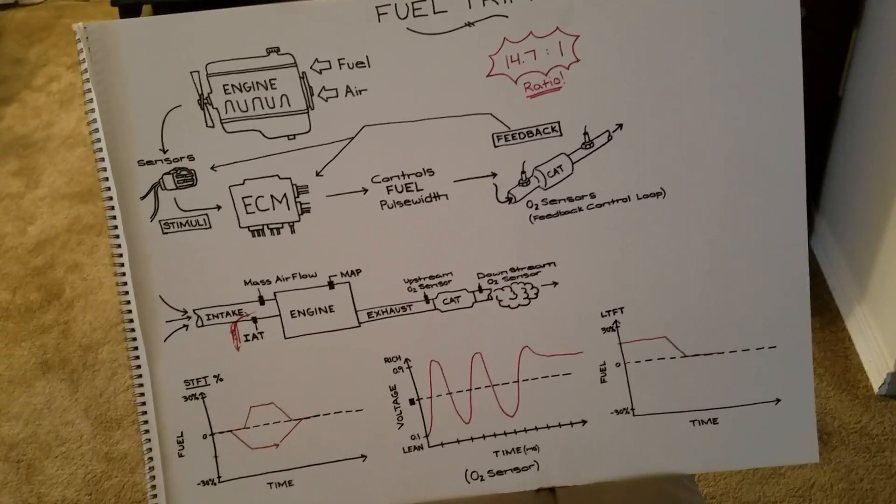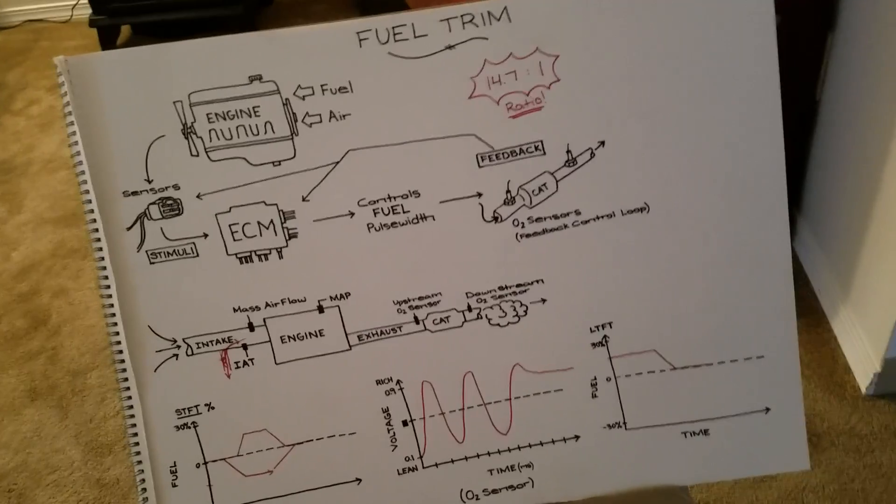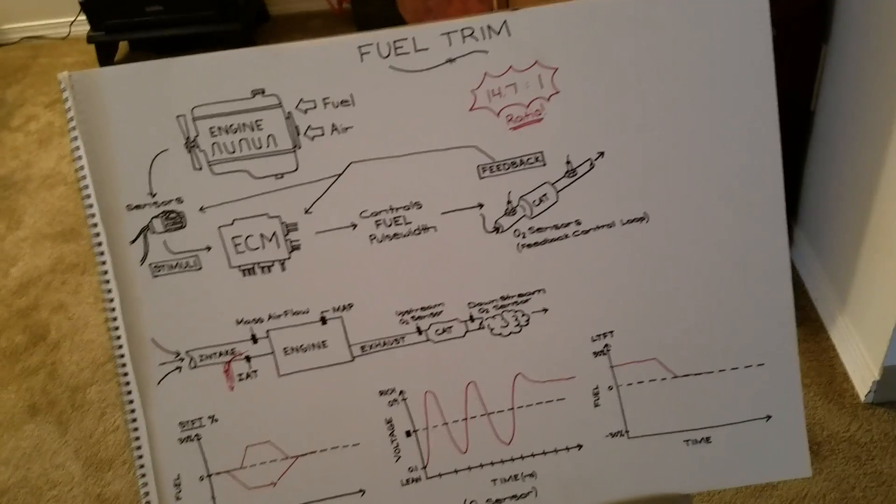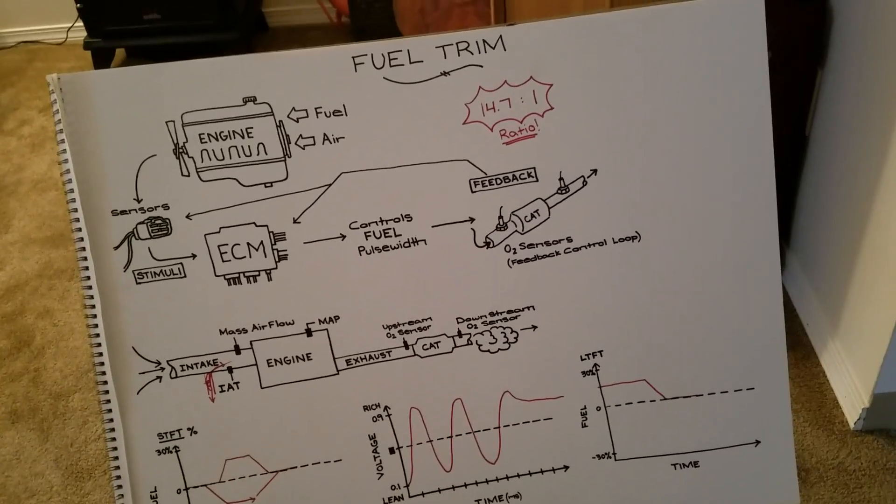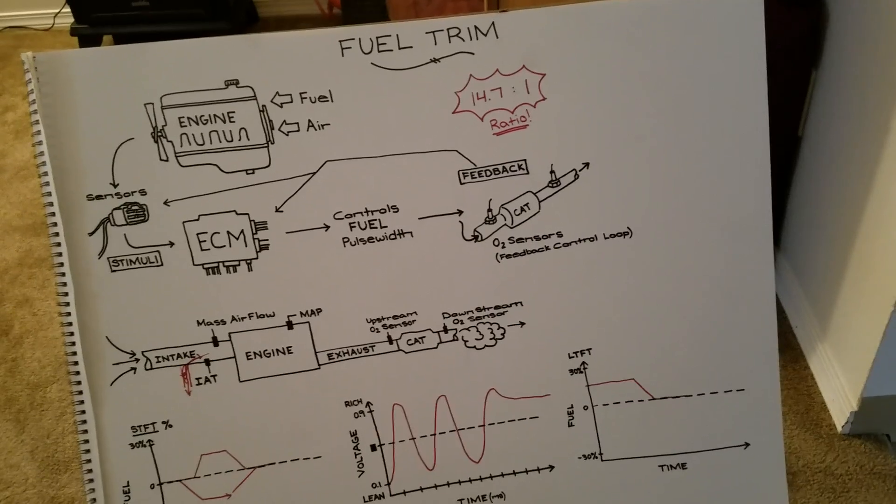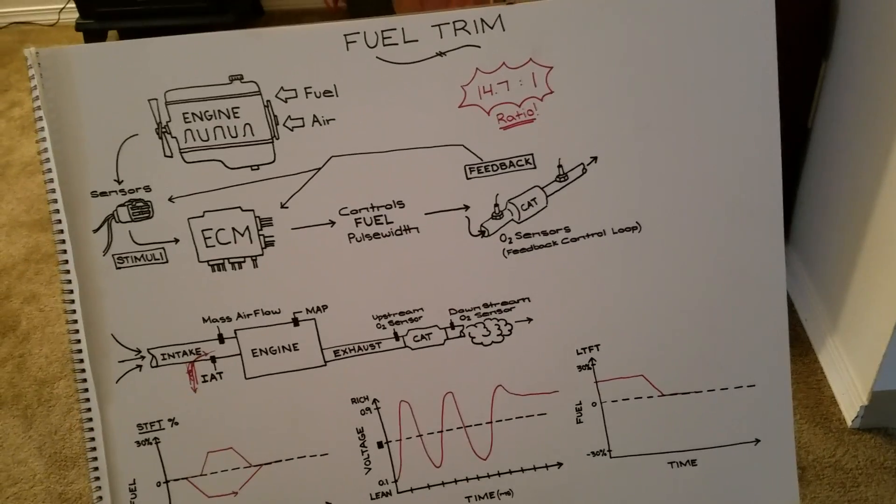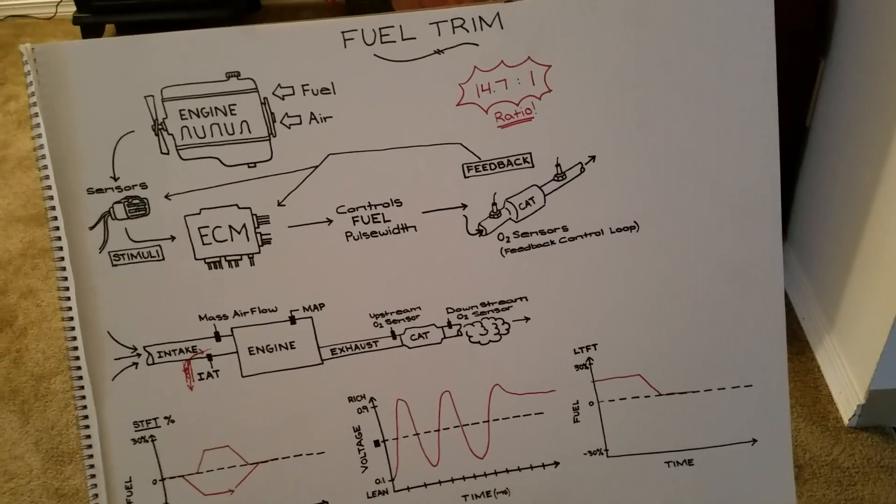This refers to electronically fuel injected engines. Older vehicles, older applications that had carburetors, it was a mechanically adjusted system. Basically the goal of this system is to maintain the stoichiometric value of 14.7 units of air to 1 unit of fuel.